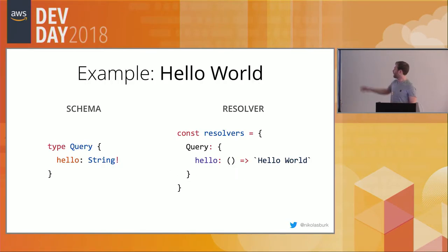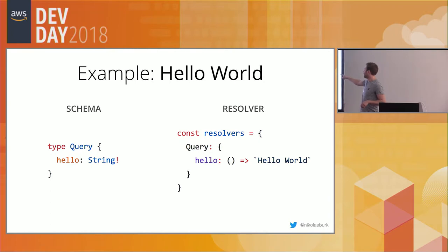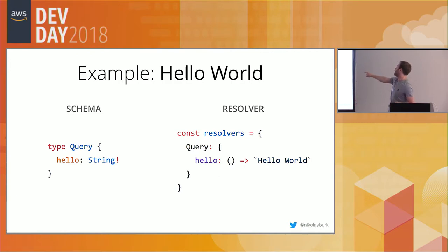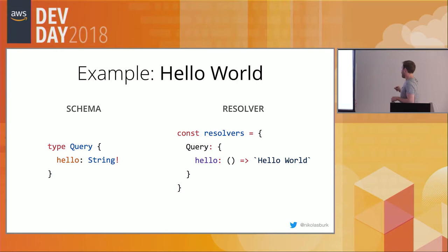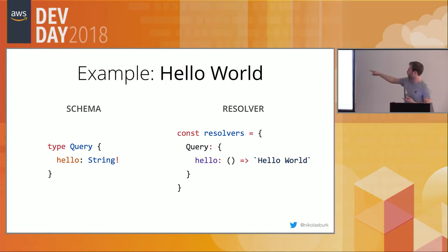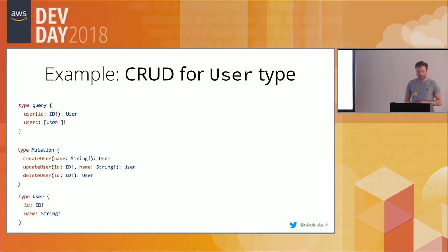Here's the hello world example with the simple schema on the left and a possible resolver implementation on the right. We define a JavaScript object called resolvers, and its structure must map to the schema structure - so inside the resolvers object we have a Query field containing a hello function. When a query comes in, the GraphQL server invokes this resolver and returns the 'Hello World' string.